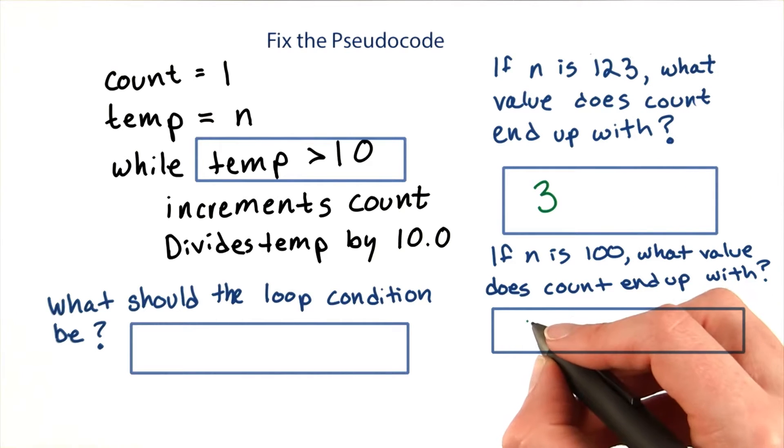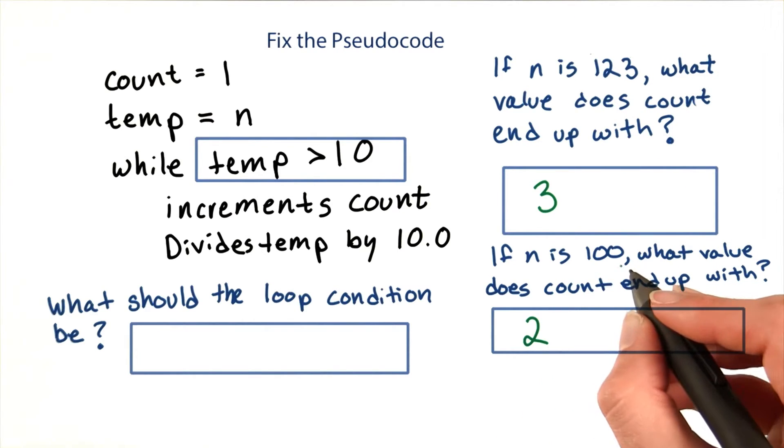If n is 100, count will end up as 2, which is not the correct number of digits.